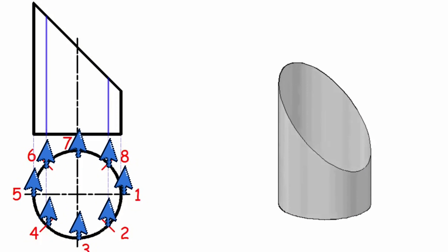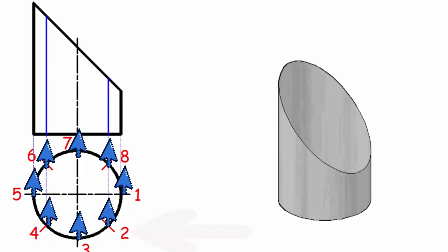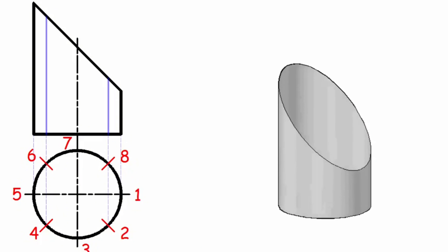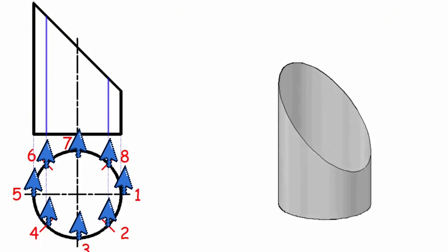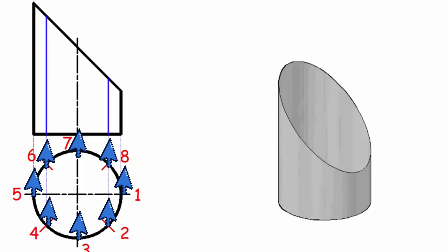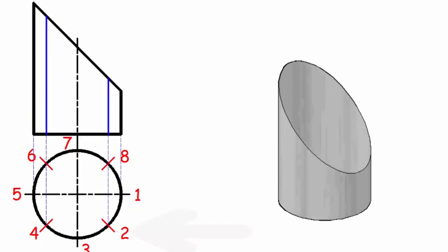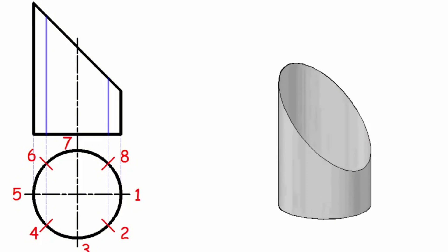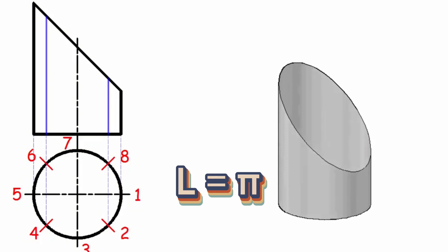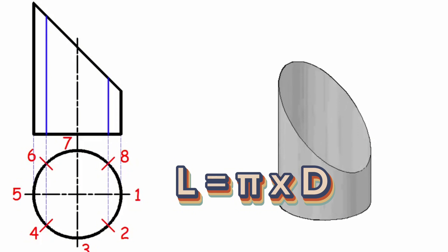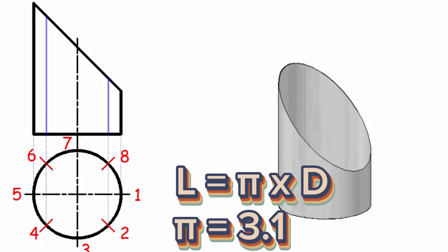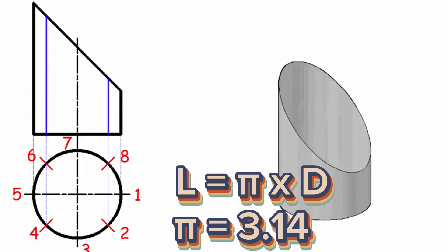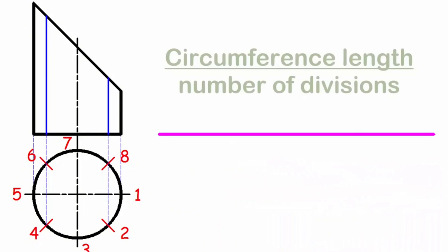All vertical straight lines intersect with the 45-degree cut surface of the pipe. Then we will calculate the length of the circumference of the pipe. We calculate the length of the circumference with this formula: L equals pi multiplied by d. The value of pi is approximately 3.14. We divide this length of the pipe into 8 equal places.